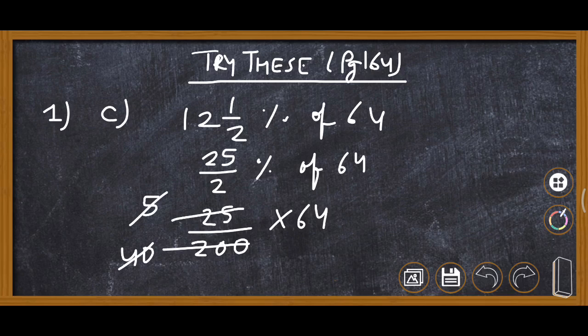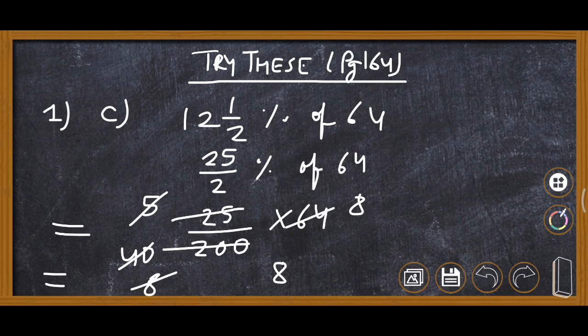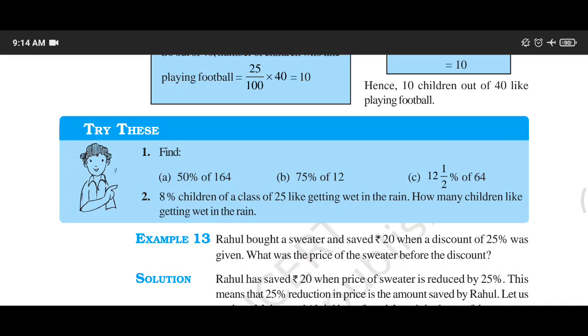Now we can remove it: 5 5s are, and 5 40s are, and 5 8s are. Here 8 8s are 64. So our answer is 8.